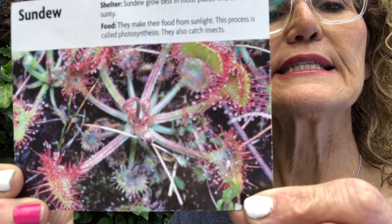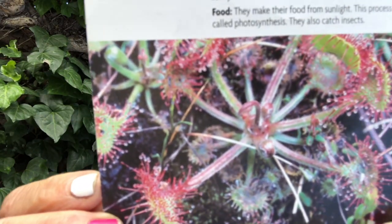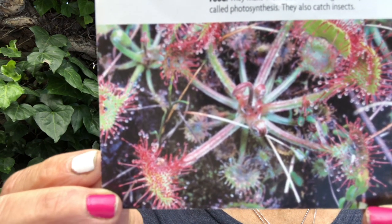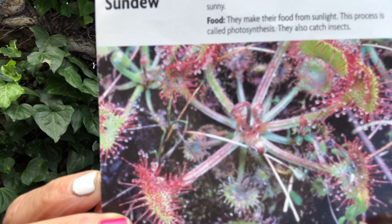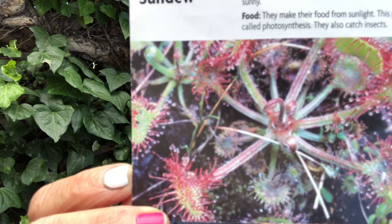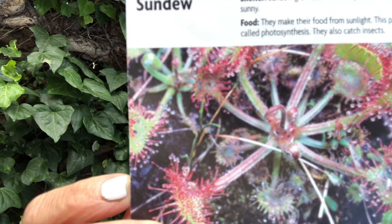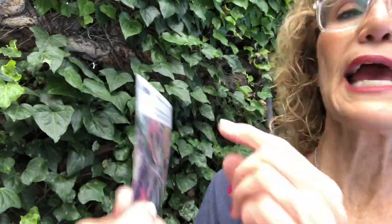This is a sundew plant. Sundew plants grow best in moist, sunny places because they get a lot of energy from the sun. They make food from sunlight — this process is called photosynthesis. They also catch insects using a sticky substance. They live in a temperate forest and the wetland. Their predators are deer and snails. An interesting fact: the sundew can grow in wet places where the soil has very few nutrients, and it compensates by catching insects to get nutrients from them.